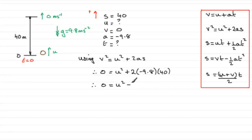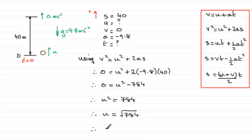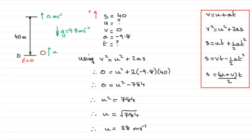Tidying this up: 0 equals u squared, and this term comes to minus 784. Adding 784 to both sides, we end up with u squared equaling 784. We just need to take the square root of that to get u, and it turns out to be an exact value: u equals 28 meters per second. Normally when you take a square root it would be plus or minus, but it's the positive value here because upwards is positive and the ball was initially projected upwards.